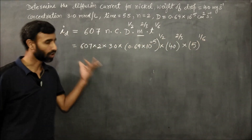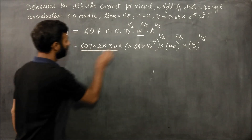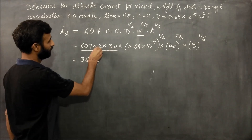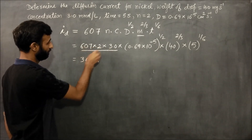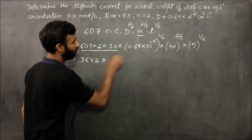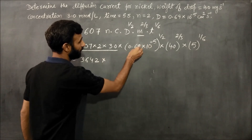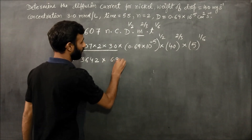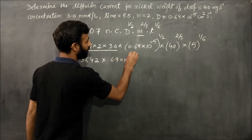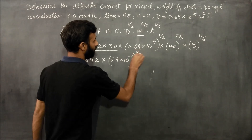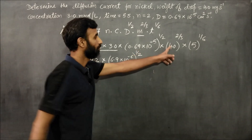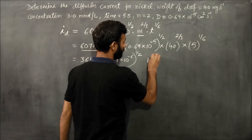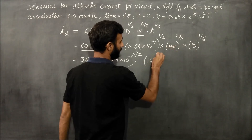On solving: the value involves 607 times the given terms. We compute 6.9 times 10 raised to power minus 6, raised to power 1/2. Then 4 raised to power 2/3, which equals 16 raised to power 1/3.